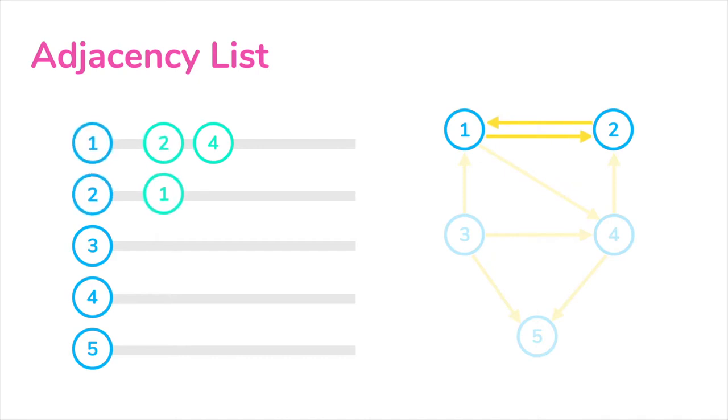Do you see how one and two are pointing to each other? So if this was an undirected graph instead of a directed graph, all the vertices should be looking like this. If one has two, then two should have one. If one has four, then four should have one.